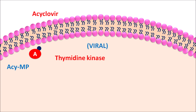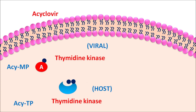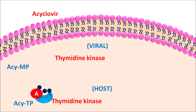Acyclovir monophosphate must be converted into acyclovir triphosphate. Further steps of phosphorylation are mediated by host kinases — thymidine kinase present within the host can phosphorylate the acyclovir monophosphate into the triphosphate form. By the action of this host enzyme, it is converted into acyclovir triphosphate.